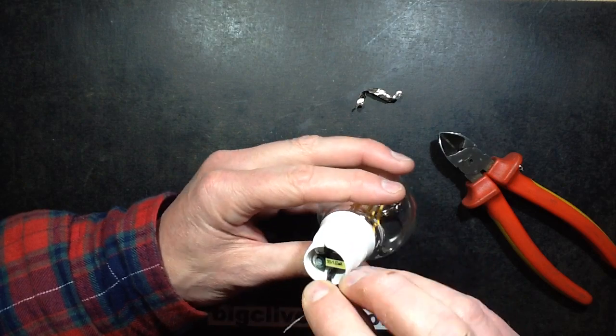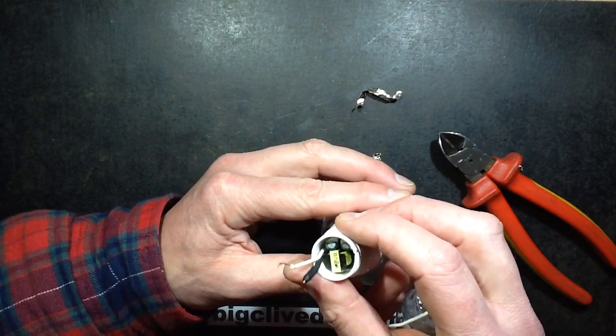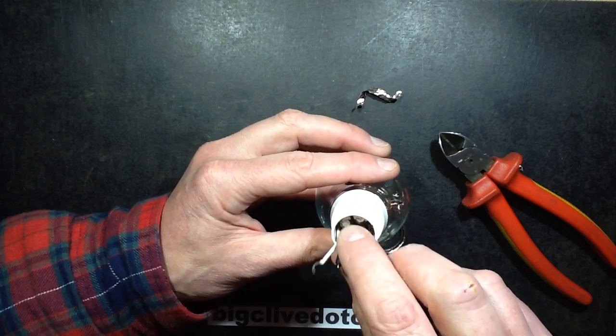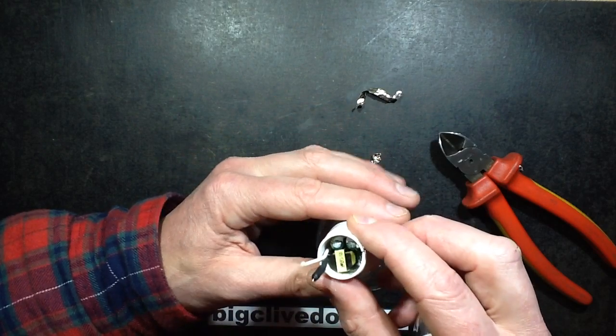So it's taking the mains and rectifying it, smoothing it. It's got two capacitors there. I wonder if that's just part of the filtering, or it might actually have one capacitor on the other side, or they could have just used the two to save space in parallel.